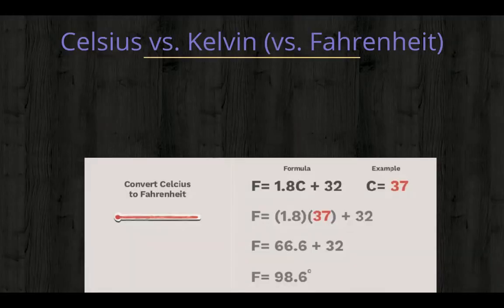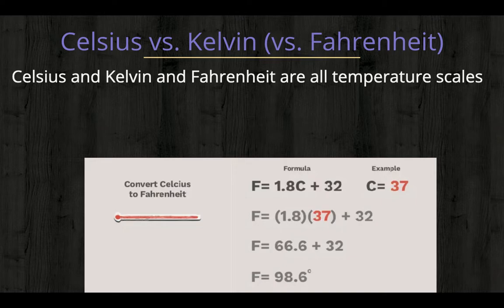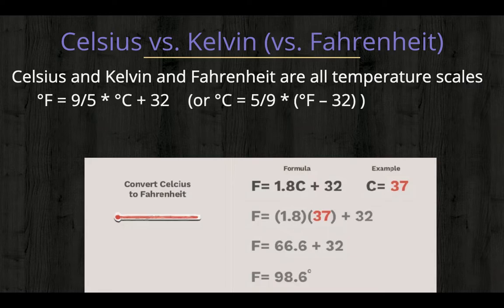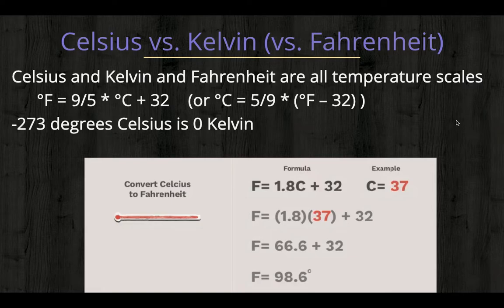Celsius, Kelvin, Fahrenheit - they're all just temperature scales, all different ways to measure temperature. You may have converted between Fahrenheit and Celsius before in some class. You might remember there was some long formula. To get degrees Fahrenheit, you had to multiply the degrees Celsius by 9/5 and then add 32. You could also go backwards with algebra.